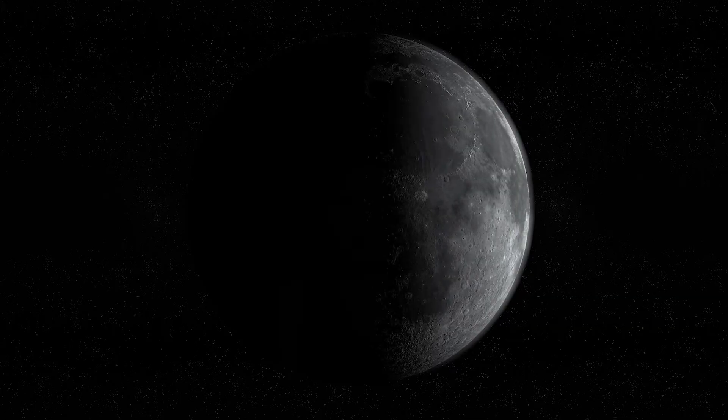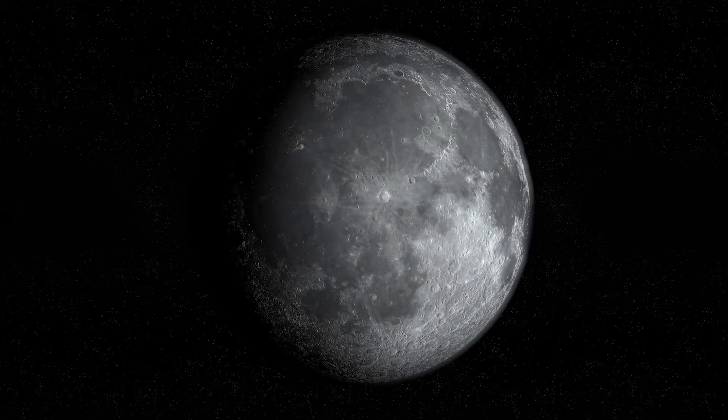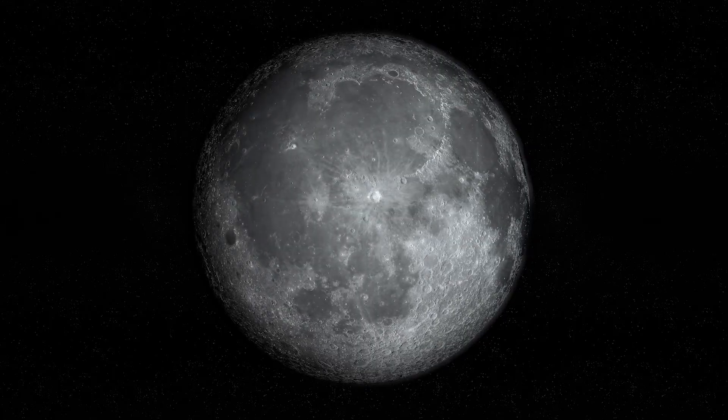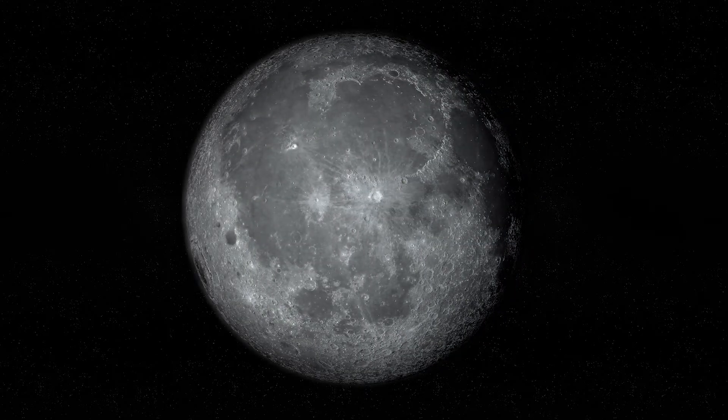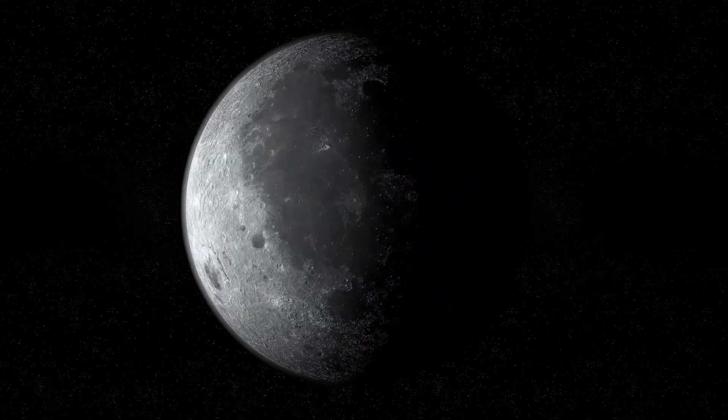Have you ever noticed that the moon changes shape each night? Sometimes it's a tiny sliver. Other times, it's a bright full circle lighting up the night sky. So why does it look different throughout the month? Today we're going to explore that question and uncover the answer together.